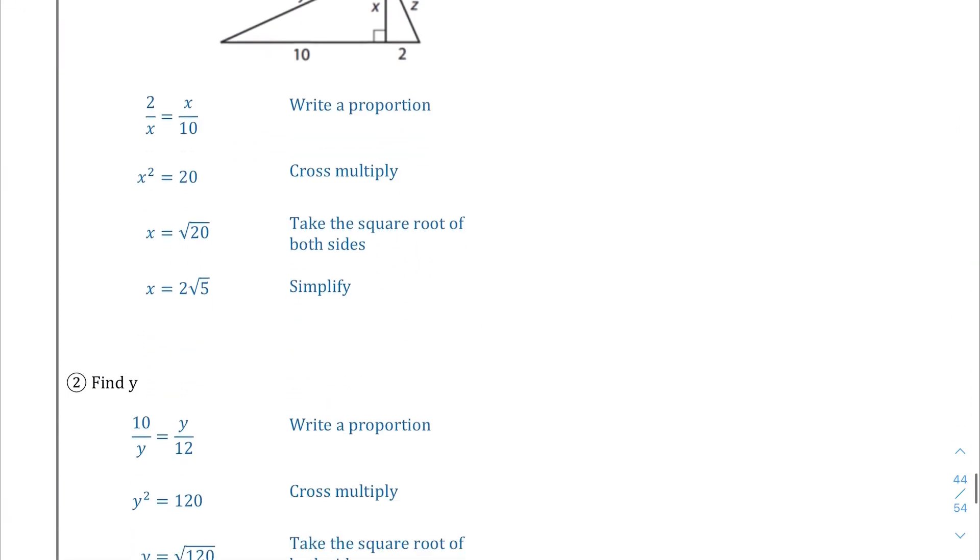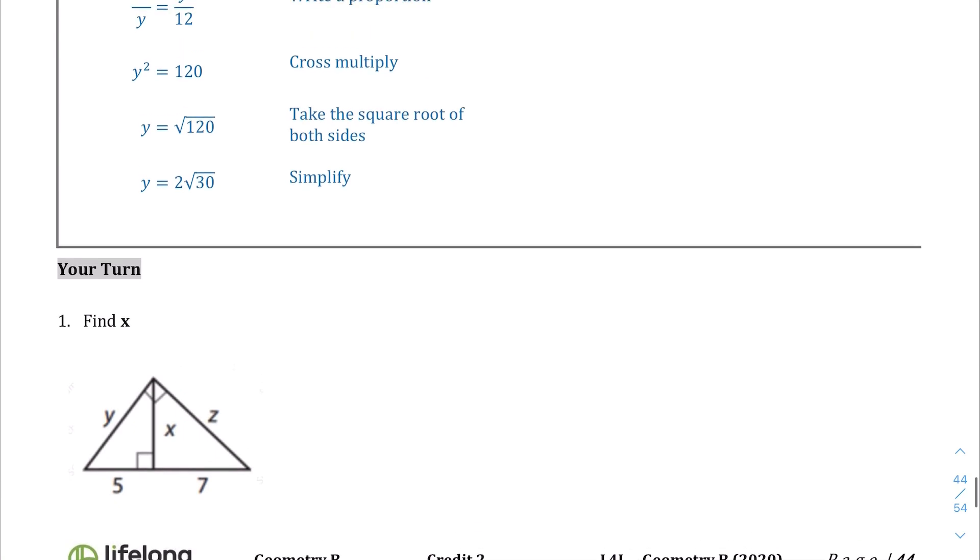Okay? So let's go ahead and use this in these examples. Here we have find x. This question is dealing with that first part of the theorem. So x, if we square it, it's going to equal this times this, 5 times 7. So x squared is equal to 35. We square root both sides. We should end up with x equals radical 35. And I think that's as good as it's going to get, radical 35.